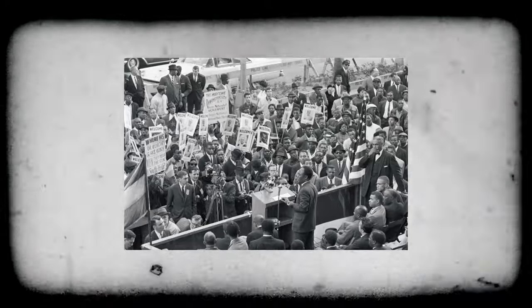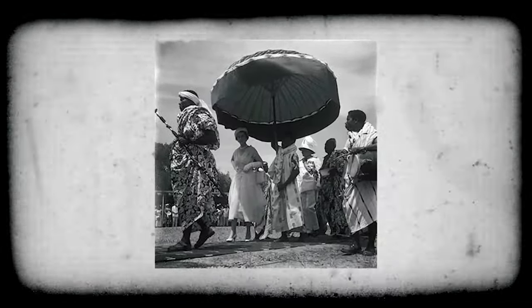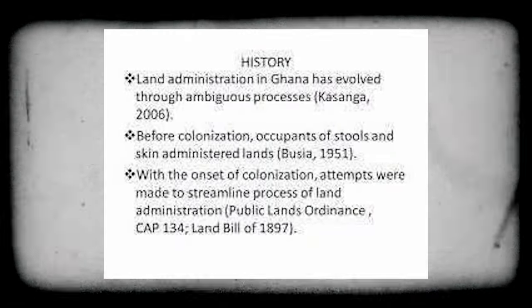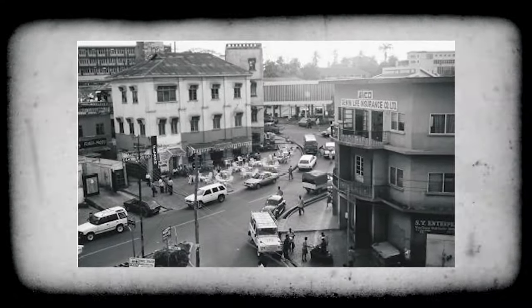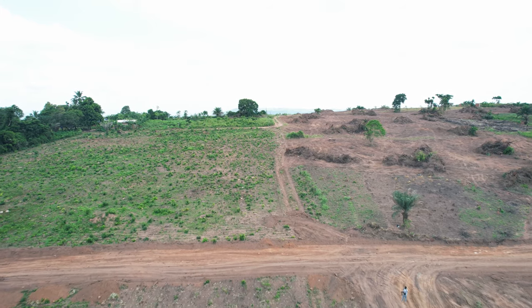We cannot discuss land administration in Ghana without putting it within the historical context. In 1897, a lot of political scientists and legal scholars will tell you those are the events that kick-started our independence struggle. In 1896, the British colonial authority introduced a land bill which essentially suggested that there were ownerless lands in West Africa and the Gold Coast particularly — any land not in use was considered to have no ownership. There were people like John Mensah Sarbah, Casely Hayford, J.P. Brown and others who stood up and fought against the British.